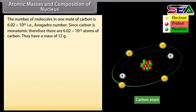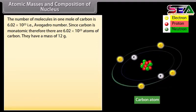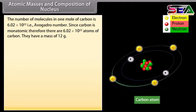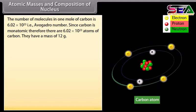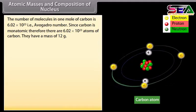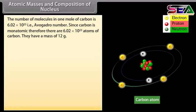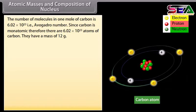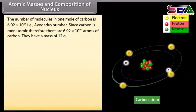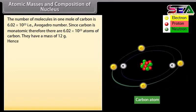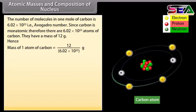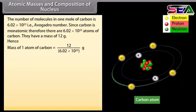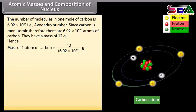Atomic masses and composition of nucleus. The number of molecules in one mole of carbon is 6.02 × 10²³, which is Avogadro's number. Since carbon is monoatomic, there are 6.02 × 10²³ atoms of carbon, and they have a mass of 12 grams. Hence, the mass of one atom of carbon is equal to 12 / (6.02 × 10²³) grams.